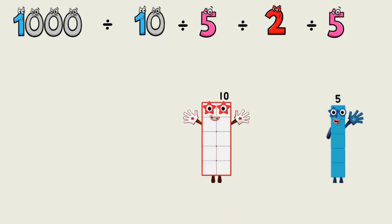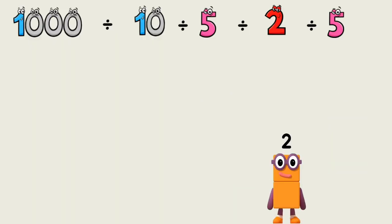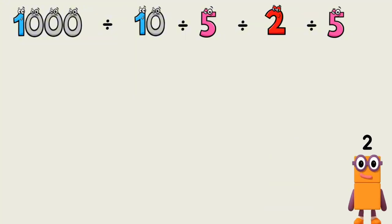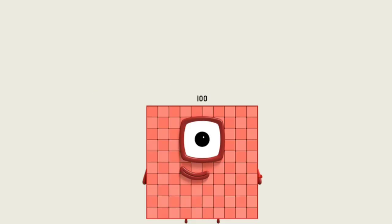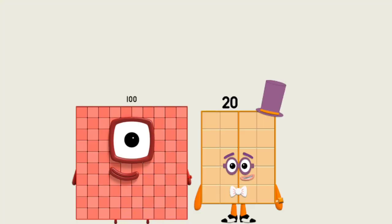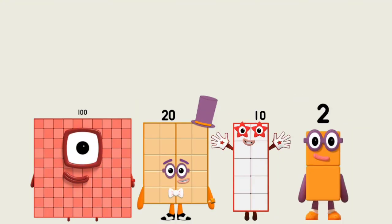10 divided by 5 equals 2. Overall results: 20, 10, 2.